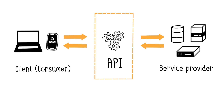In simpler terms, APIs facilitate communication between applications, where one application consumes a service provided by another application, which acts as the producer of that service.